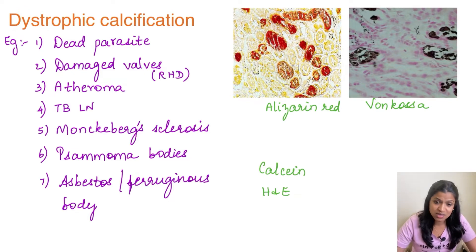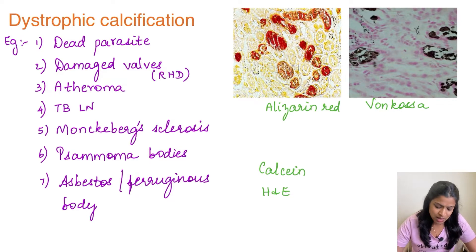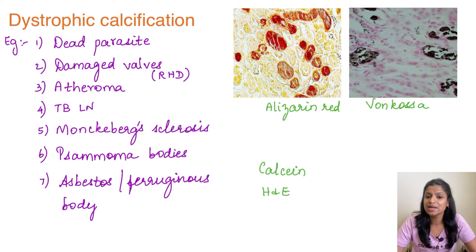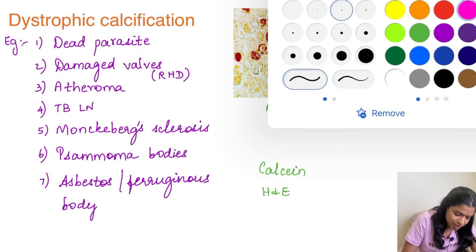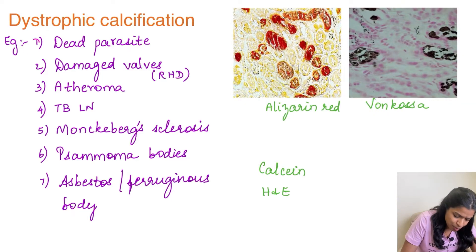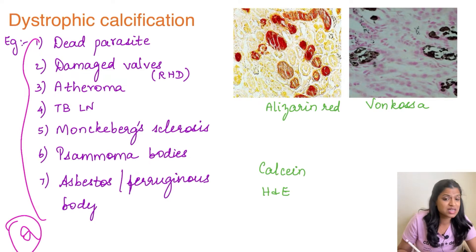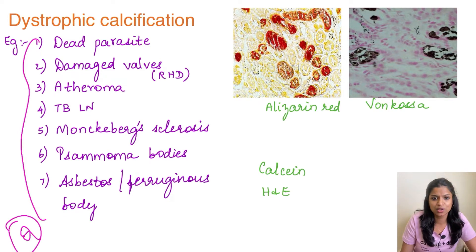Monckeberg's sclerosis, psammoma bodies, and asbestos or ferruginous bodies are all examples of dystrophic calcification. These are very important MCQs and have all been asked, so do remember them.